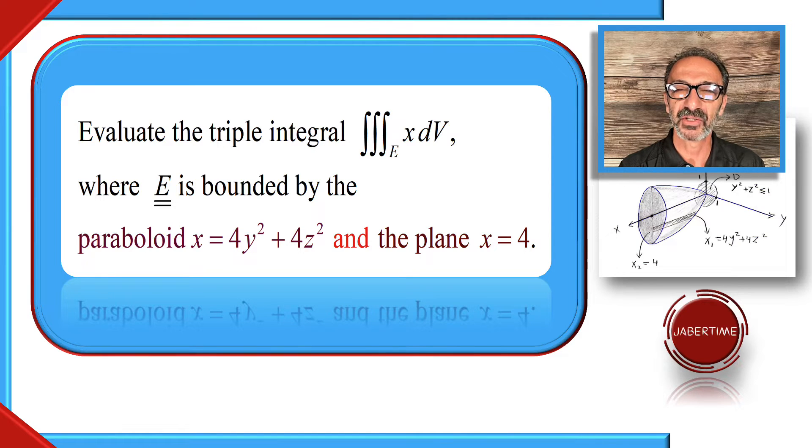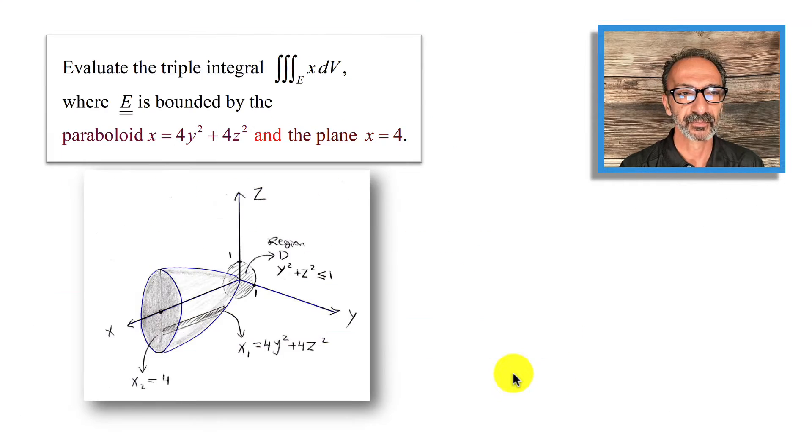Hi, welcome to my channel Jabbertang. Here's another example about triple integral of x dV, where E is bounded by the paraboloid x equals 4y² plus 4z² and the plane x equals 4. Let's get started.